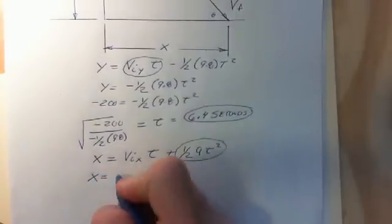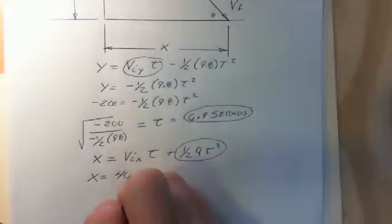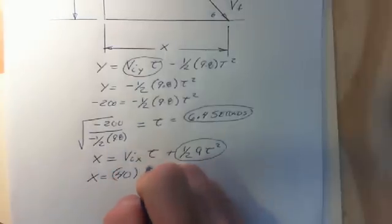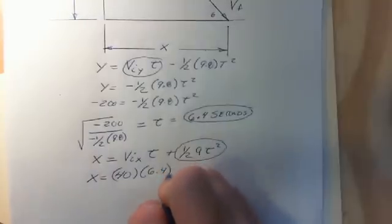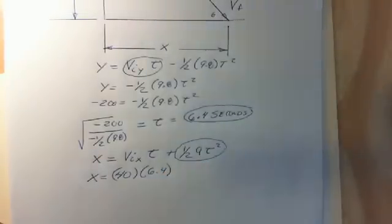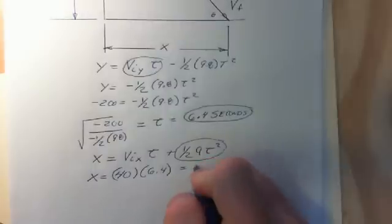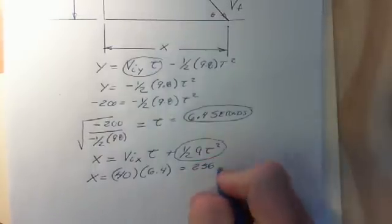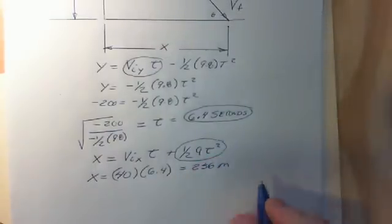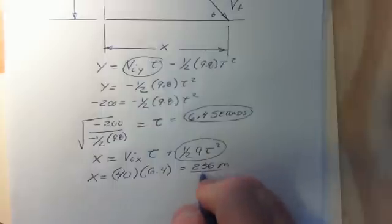So x in this case would equal to our horizontal velocity, which we said was 40 when it comes off. We multiply that by 6.4 seconds. And run that through my calculator real quick. And 6.4 times 40. This is a value of about 256 meters. So our horizontal displacement would be about 256 meters.